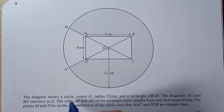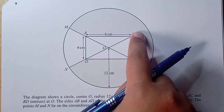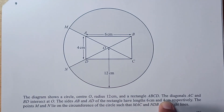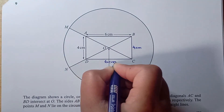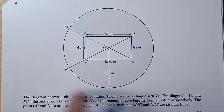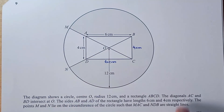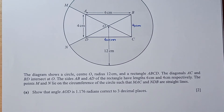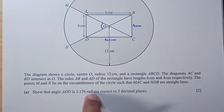Question number 9: the diagram shows a circle with center O, radius 12 cm, and rectangle ABCD whose diagonals intersect at O. AB equals 6 cm and AD equals 4 cm. Points M and N lie on the circumference such that M, A, C and N, D, B are straight lines. Part a: show that angle AOD equals 1.176 radians to 3 decimal places. The half-lengths from center are 3 and 2. Using tan theta equals 2 over 3, theta equals arctan(2/3) equals 0.5880 radians. Angle AOD equals 2 times 0.5880 equals 1.1760, confirming 1.176 radians.